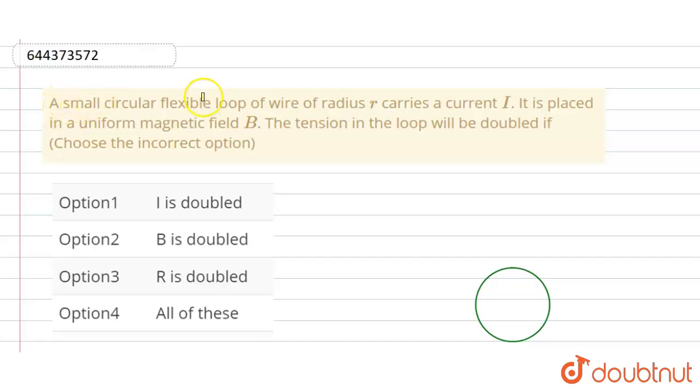Hello everyone. A small circular flexible loop of wire of radius small r carries a current i. It is placed in a uniform magnetic field B. The tension in the loop will be doubled if—choose the incorrect option.